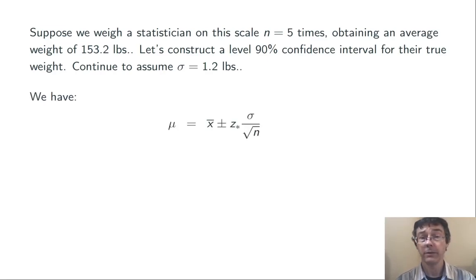Here again is our formula for the confidence interval. We just need to plug in. Again, the sample mean is 153.2, n is 5, and σ is 1.2. Here, z* equals 1.645 is the critical z score corresponding to the confidence level of 90%. And you can get that using technology or by looking at a table.